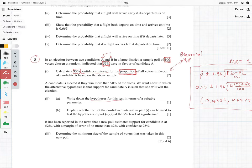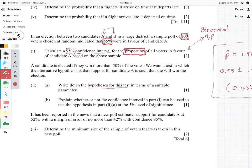Okay let's go on to the second part of the question. A candidate is elected if they win more than 50 percent of the votes. We want to test in which the alternative hypothesis is that support for candidate A is such that she will win the election. So now they're telling us what the alternative hypothesis is. Write down the hypothesis for this test in terms of a suitable parameter.